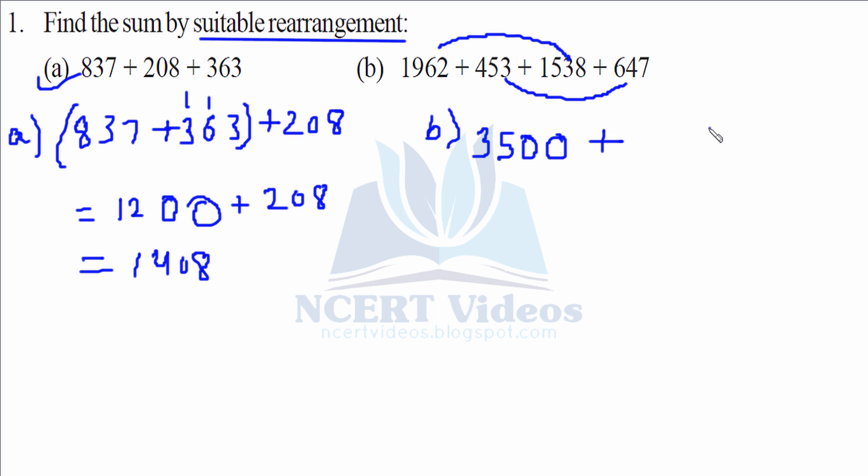Here 7 plus 3 is 10. 5 plus 4 plus 1 is again 10. It gives us 1100. Now we can easily add 3500 plus 1100 to give us 4600. That makes your question number b.